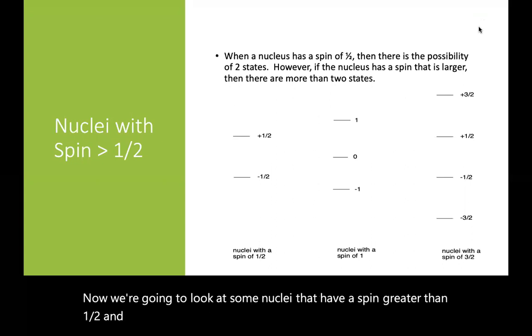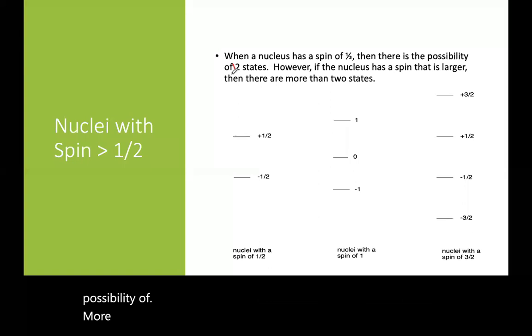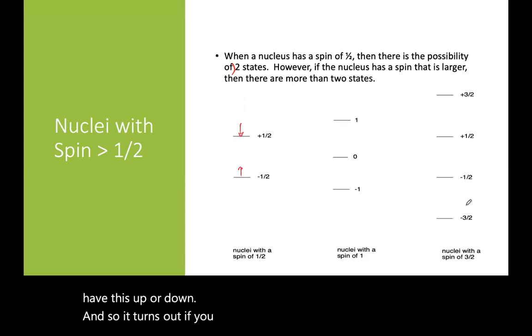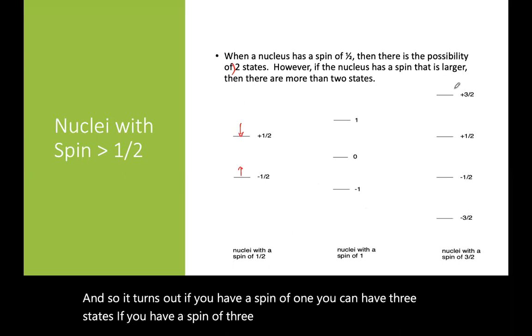And when you have a spin greater than one half, then you have the possibility of more than two states. So we've been looking at nuclei with a spin of a half, and they can have this up or down. If you have a spin of one, you can have three states. If you have a spin of three halves, you can have four possible states. So there's a lot more coupling that can happen.